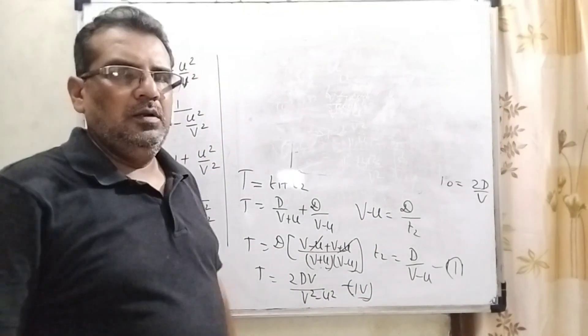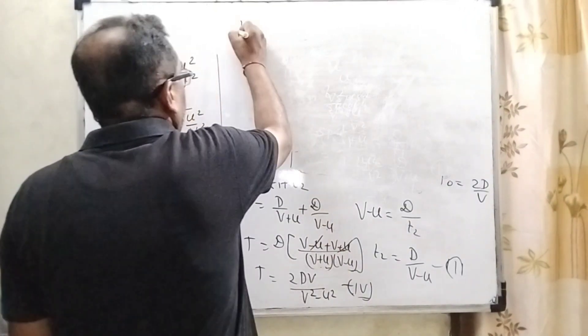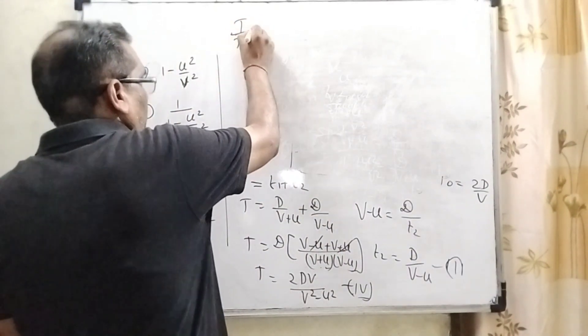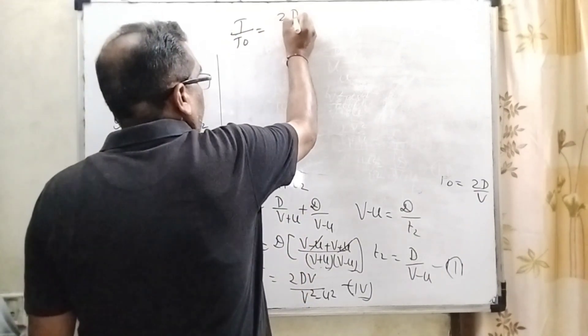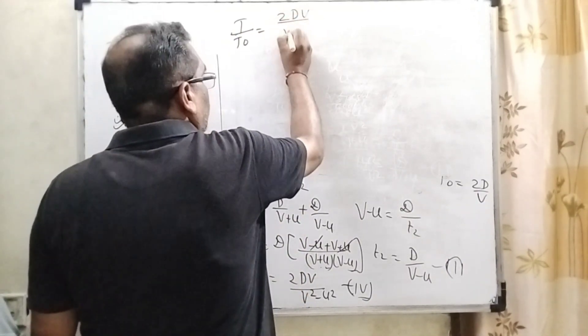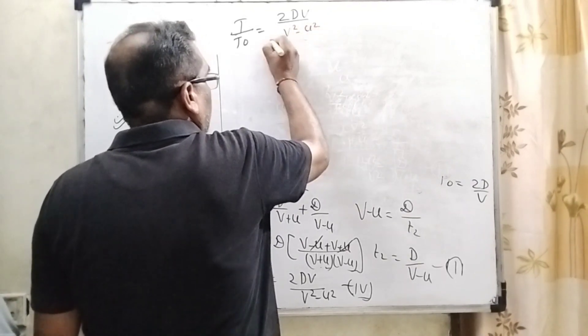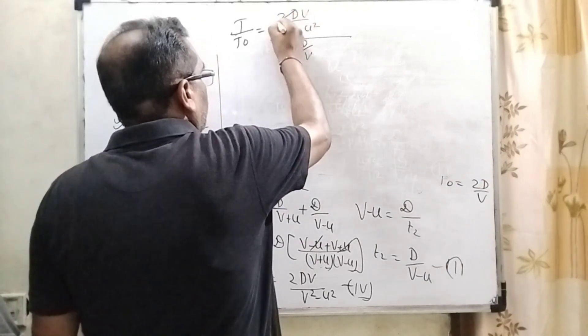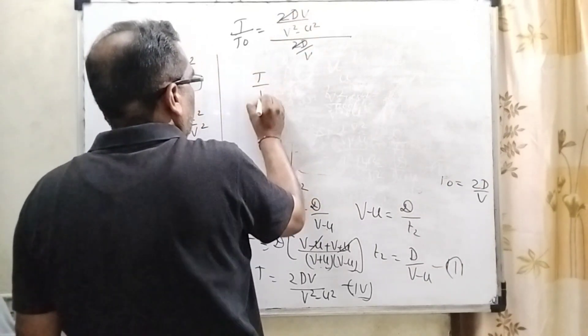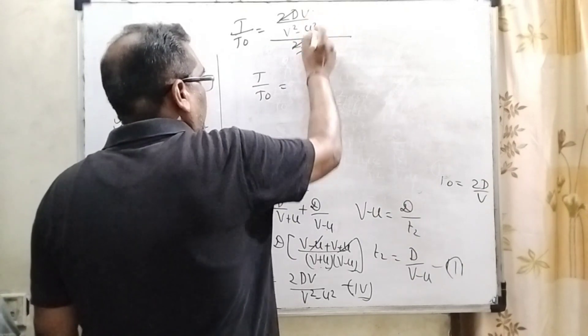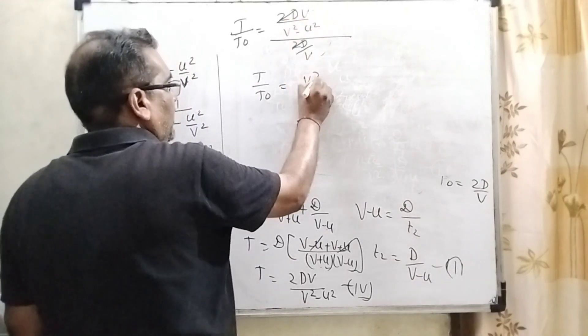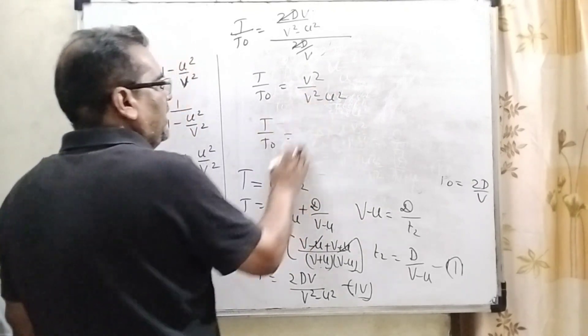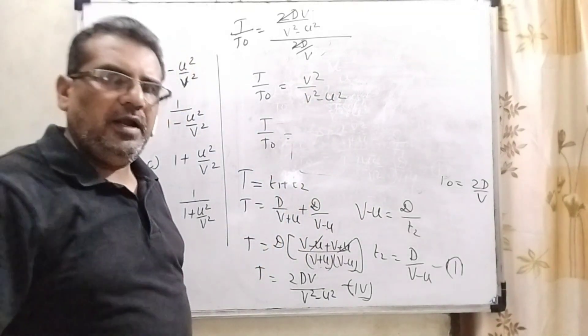But what we have to find out? Now here we have to find out T by T0. What is the value of T? It is 2DV upon V square minus U square upon what is the value of T0? 2D by V. Here 2D, 2D cancel out. Now it becomes V square upon V square minus U square. Now here divided by V square in numerator and denominator.